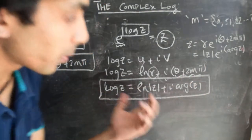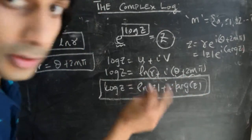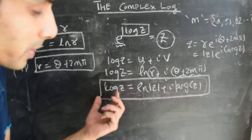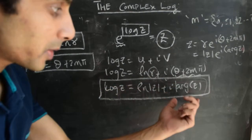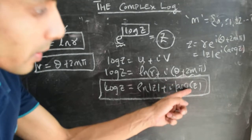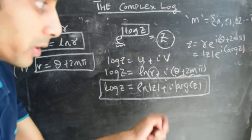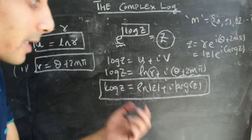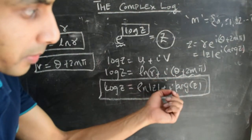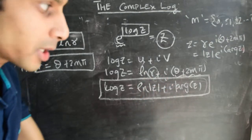Now you can see what this expression tells us. The imaginary part of the complex log is the argument of z, and the argument is inherently multivalued. So the complex log has a branch point at z equals 0. It is multivalued and has a logarithmic branch point at the origin.